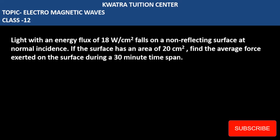Let's start with the next question. Light with an energy flux of 18 watt per centimeter squared falls on a non-reflecting surface at normal incidence. If the surface has an area of 20 centimeter squared, find the average force exerted on the surface during a 30 minute time span.